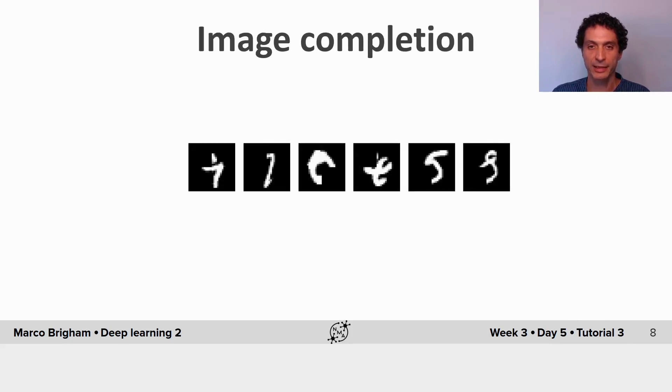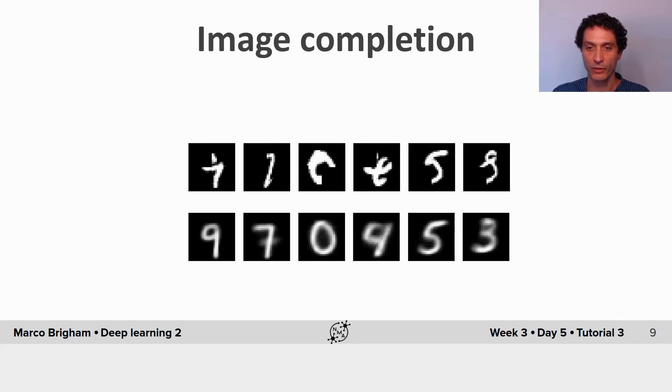Second task is image completion. When we give the occluded images to the autoencoder, it's better than the noisy task, but still it improves after training.